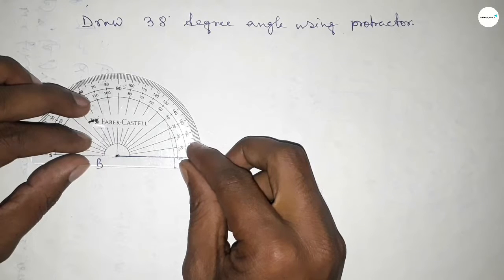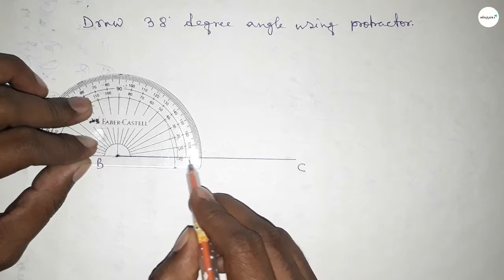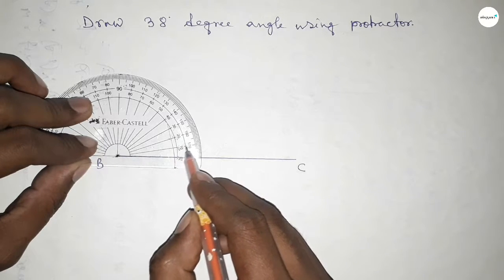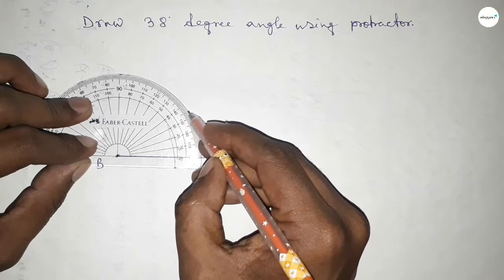By this way, now counting the angle. This is 0, 10, this is 20, 30, 35.